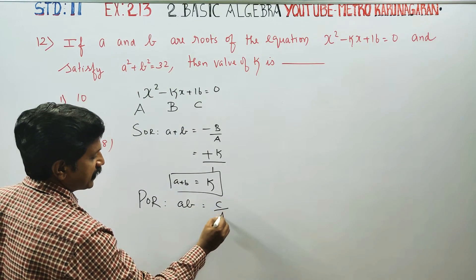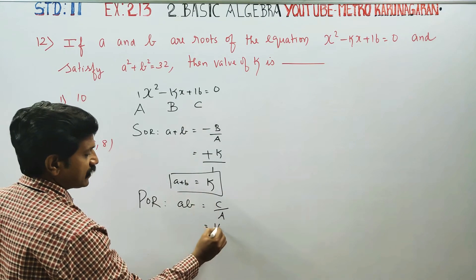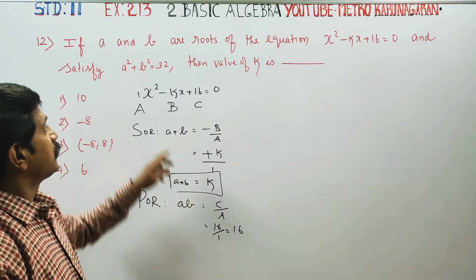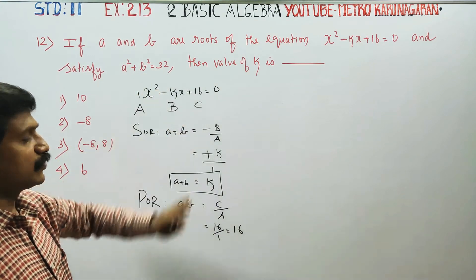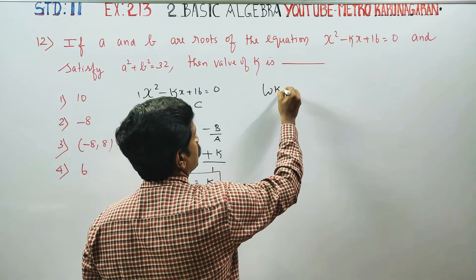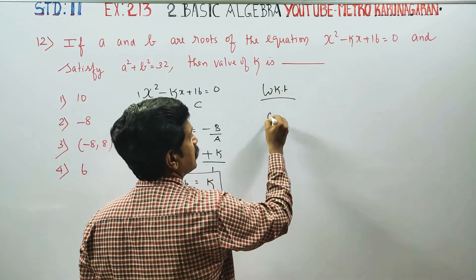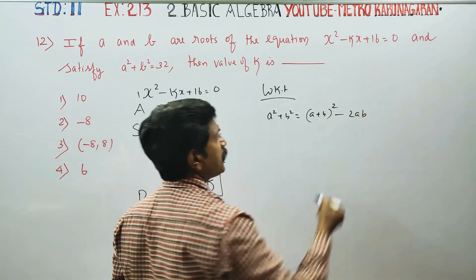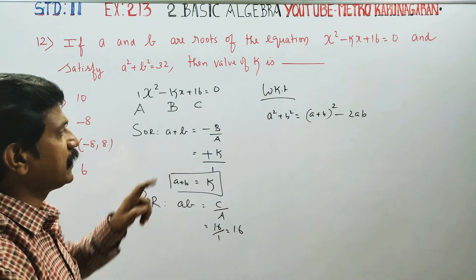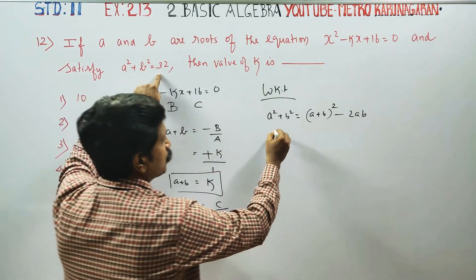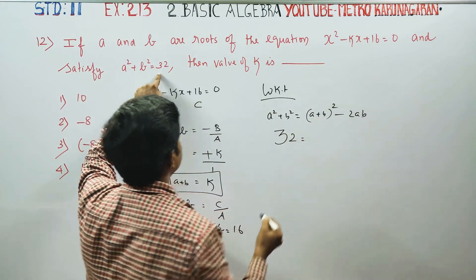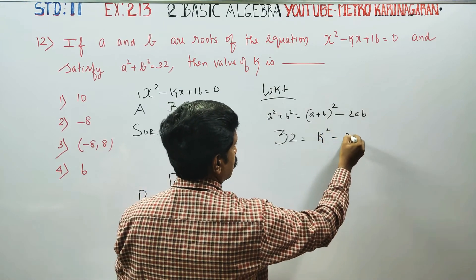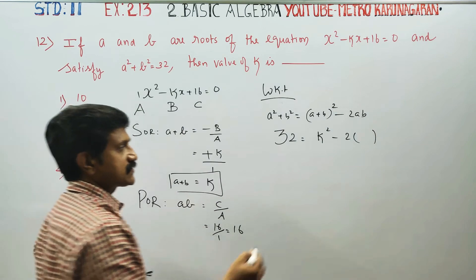It is given that A² + B² = 32. Using the algebraic identity, A² + B² = (A + B)² - 2AB. Substituting our values, 32 equals k² minus 2 times 16.